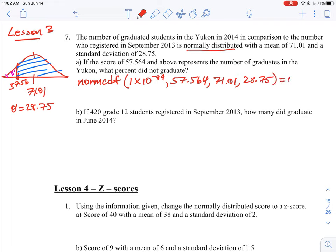That should give us a value of 0.3132, or 31.32 percent is the ungraduated portion of the population. If 420 grade 12 students went through the full school year, how many did graduate in June 2014? We know we have 420 students that we started with.